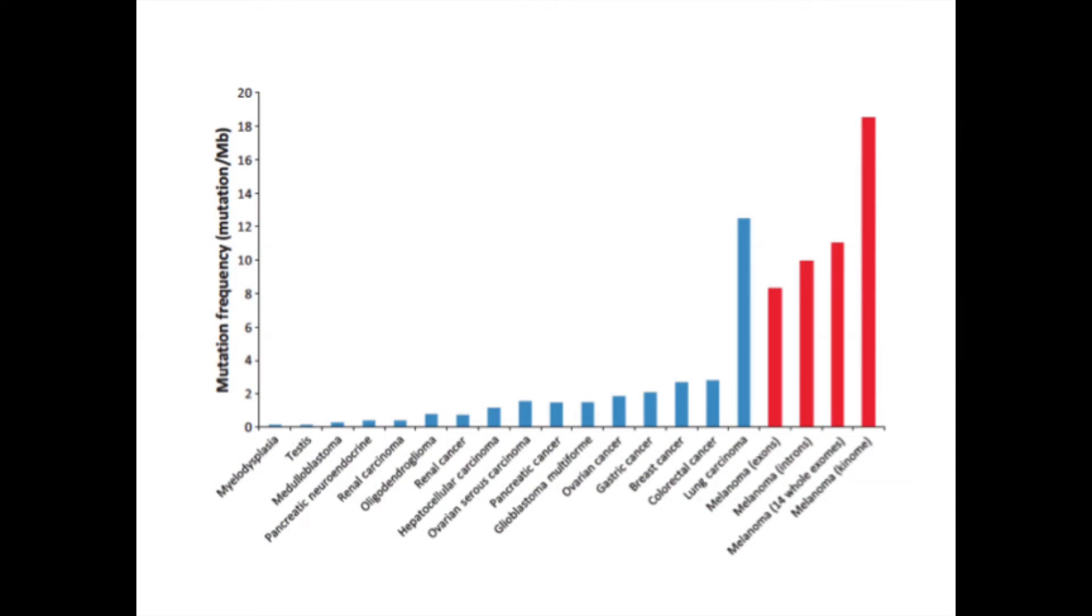Melanoma is one of the cancers with the highest mutation frequency. As you can see in this graph, melanoma is shown in red bars. This high mutation frequency is mainly due to UV damage.